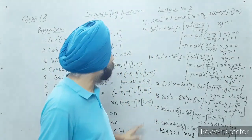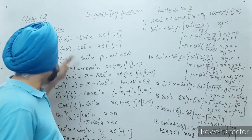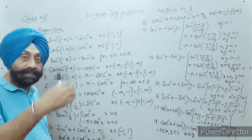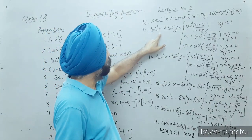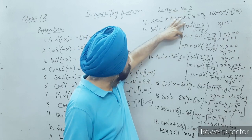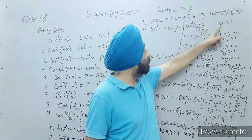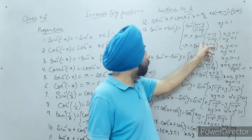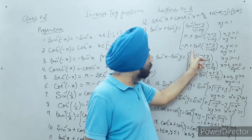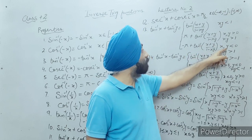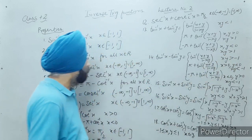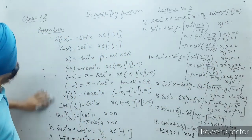There are a few more properties. Remember these properties as they will be used when we solve problems. The property for sine inverse x plus sine inverse y has three cases: first, when xy is less than one; second, when x and y are positive but xy is greater than one; third, negative pi plus the formula when xy is less than zero but the product xy is greater than one.